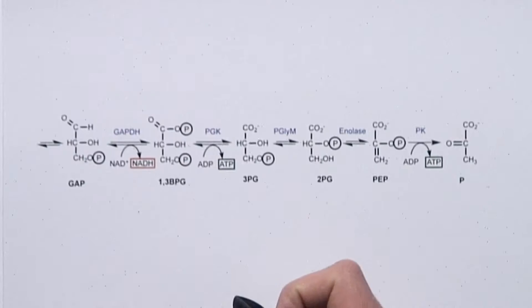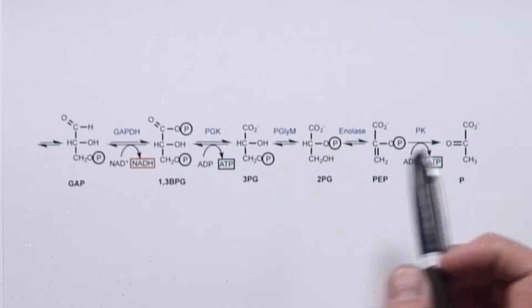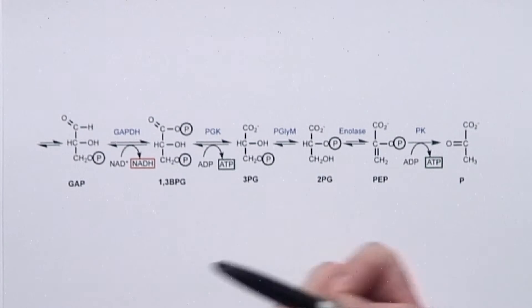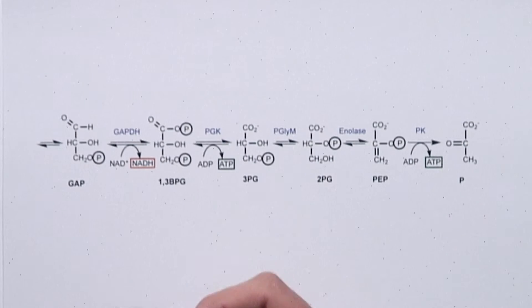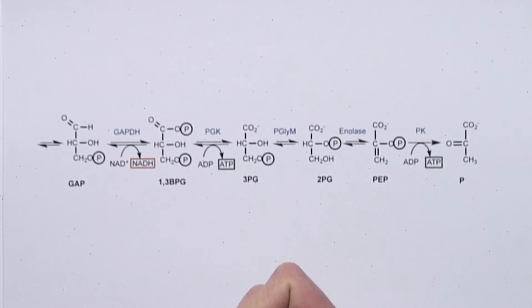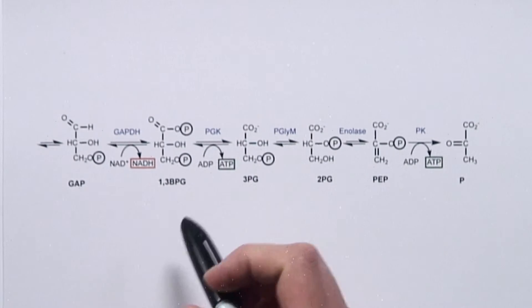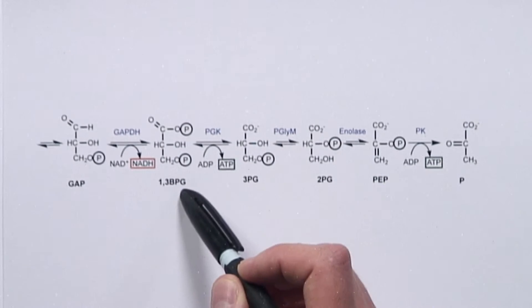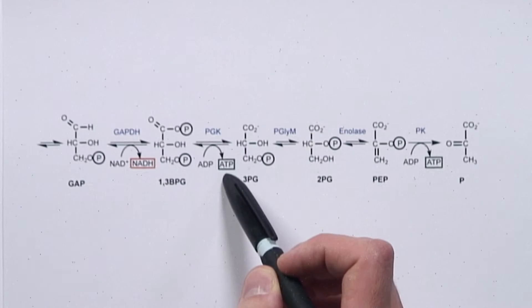Part 2 of this problem asks us to evaluate the consequences on the major function of glycolysis of the reaction between phosphoenolpyruvate and phosphoglycerate mutase. Here is the second half of glycolysis, going from glyceraldehyde phosphate, or GAP, all the way to pyruvate. The main function of glycolysis is to generate ATP. ATP is produced in two places: at phosphoglycerate kinase, when 1,3-bisphosphoglycerate phosphorylates ADP to generate ATP, and at pyruvate kinase, where phosphoenolpyruvate phosphorylates ADP to generate ATP.